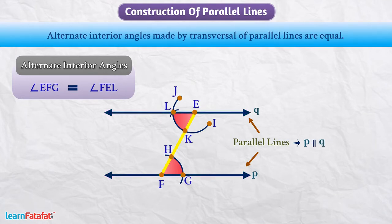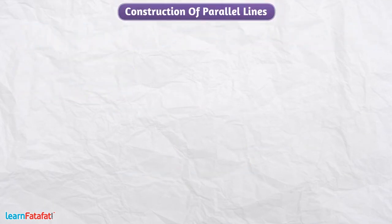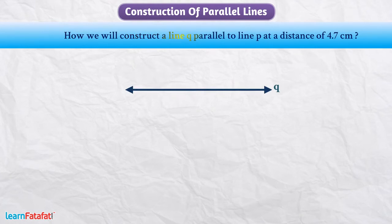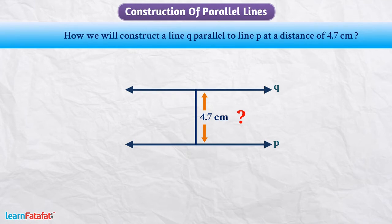I think you have understood it very well. So can you tell me how we will construct a line Q parallel to line P at a distance of 4.7 cm? Think about it. Let me tell you.